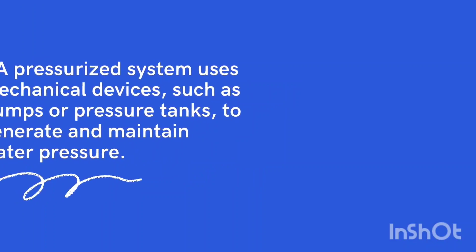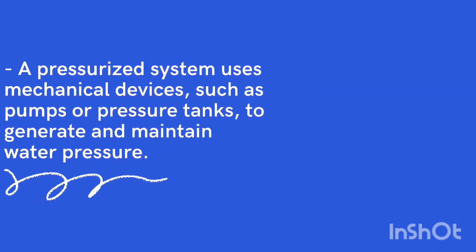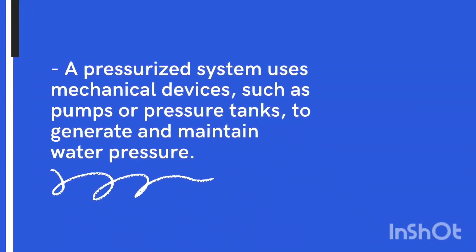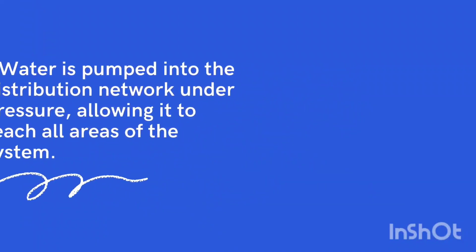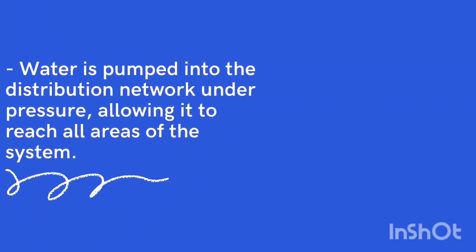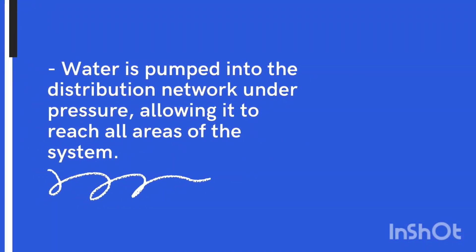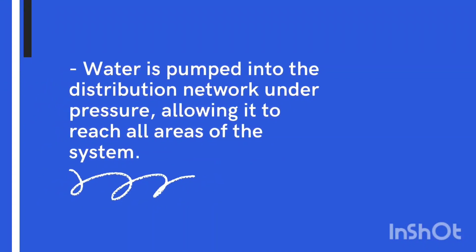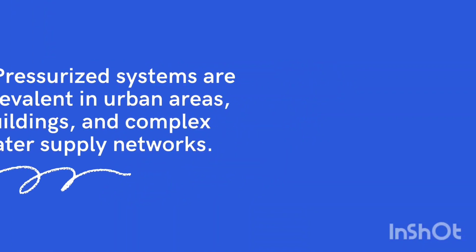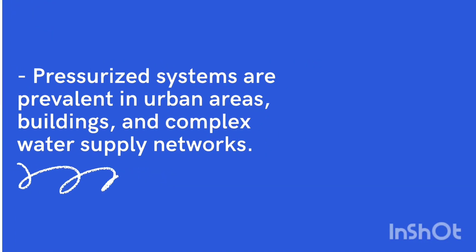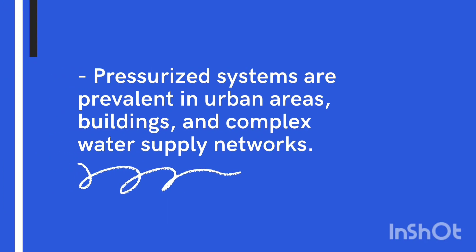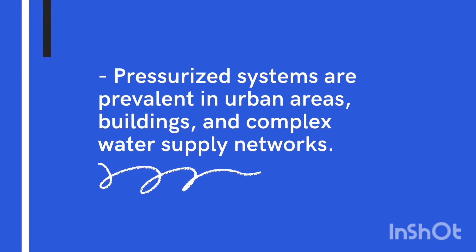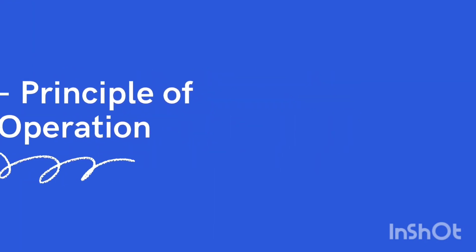A pressurized system uses mechanical devices, such as pumps or pressure tanks, to generate and maintain water pressure. Water is pumped into the distribution network under pressure, allowing it to reach all areas of the system. Pressurized systems are prevalent in urban areas, buildings, and complex water supply networks.